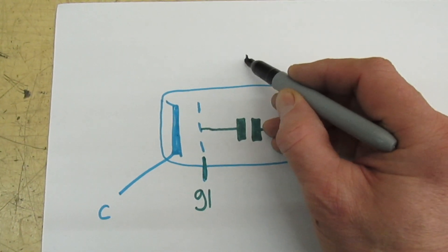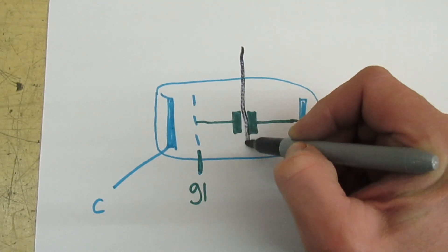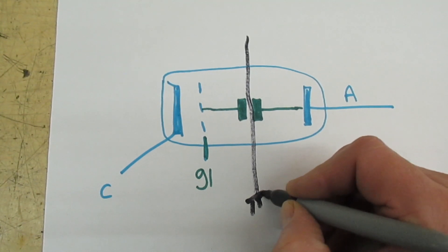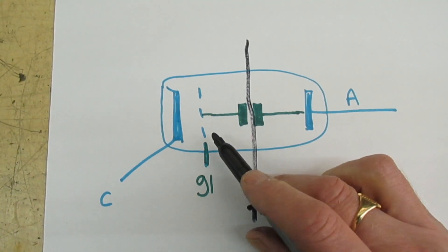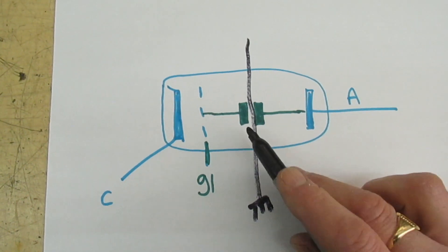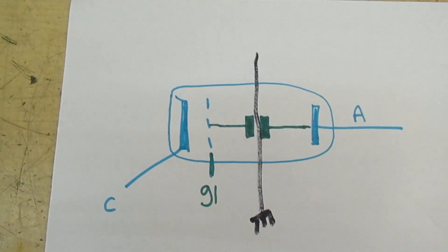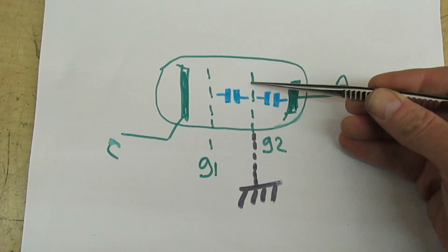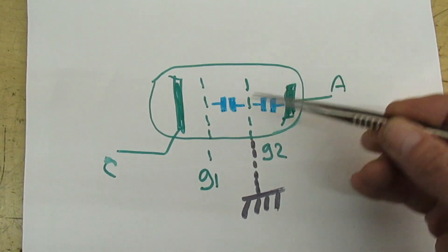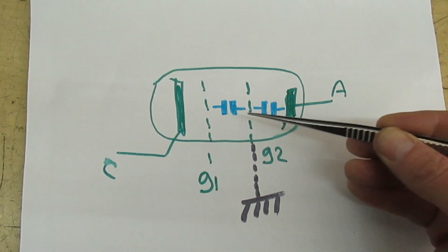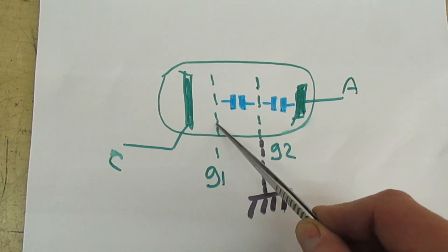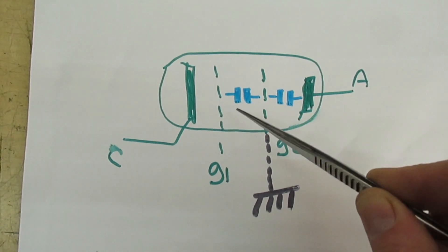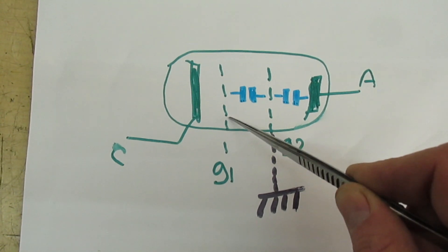What the screen grid does is it actually breaks this capacitance up. If we were to draw a line down there and then actually took this line to ground, that would break up the capacitance between grid 1 and the anode, and that capacitance would no longer be existing. When we put grid 2, the screen grid, in between the control grid and the anode, we actually break up the direct capacitance.